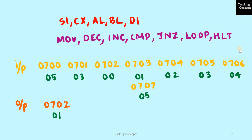Now we look into the set of input and output values expected for the case when a particular number is found in the series and when it is not found. The input values are stored from location 0700 to 0707. The first location contains the number of numbers in the series, which is 5. The second location contains the number for which the search is to be performed, which is 3. The third location contains a flag to tell us whether the number is present in the series or not — 0 if not present, 1 if found.